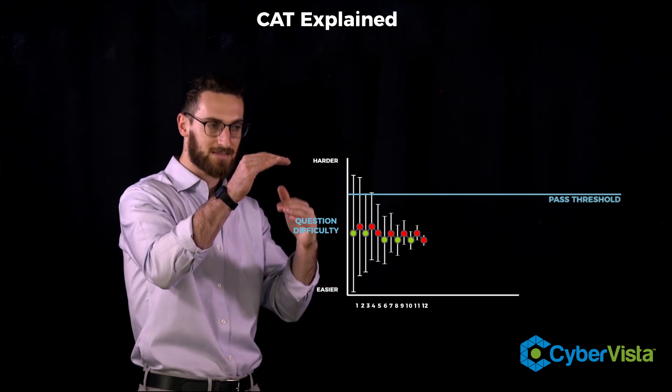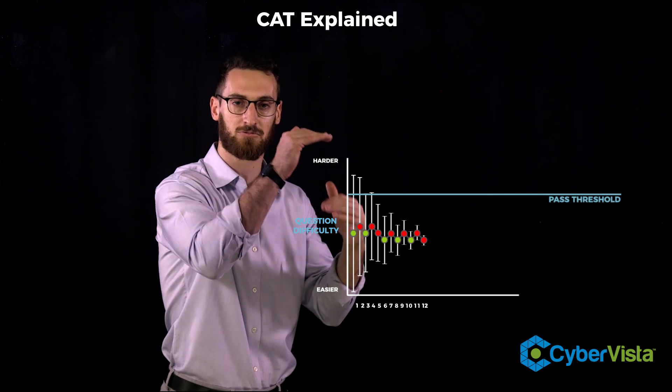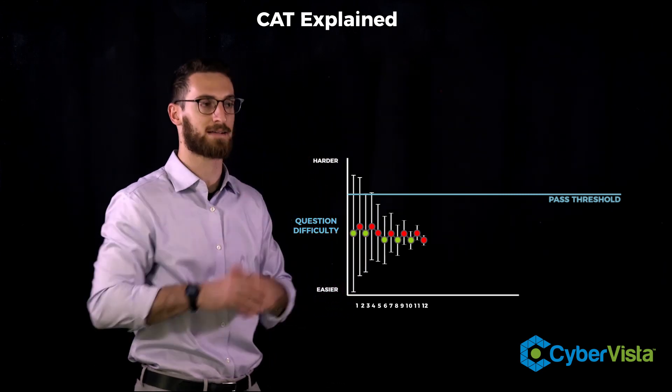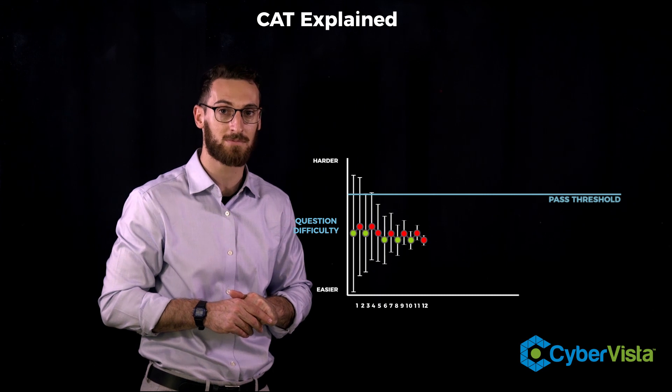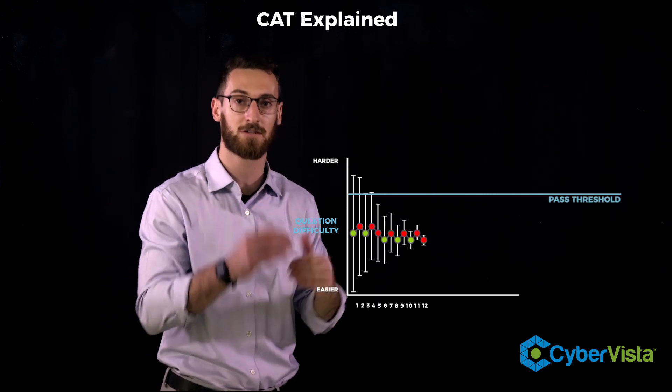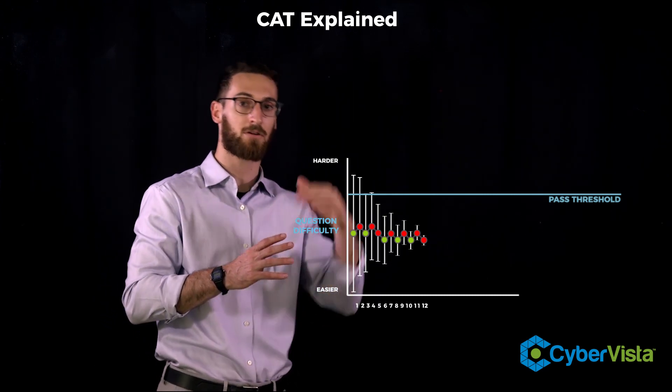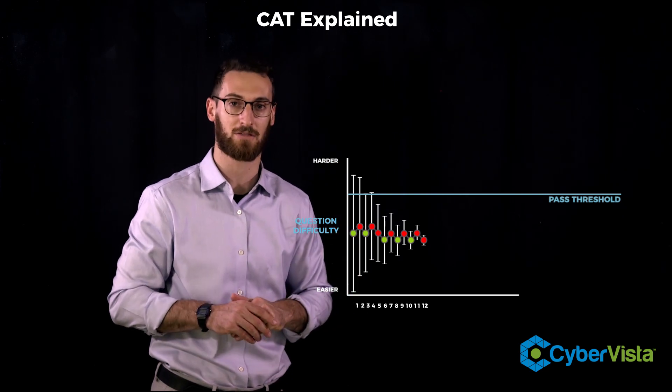And that is basically becoming more precise in its range of where you are as a test taker. And that's where the passing threshold comes in because the confidence interval is going to shrink and it's going to hang out either above or below the passing threshold.